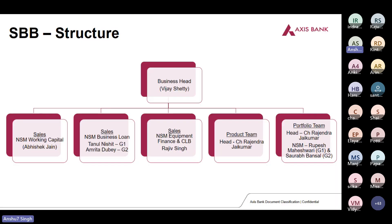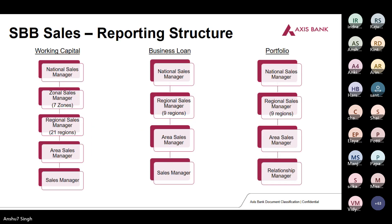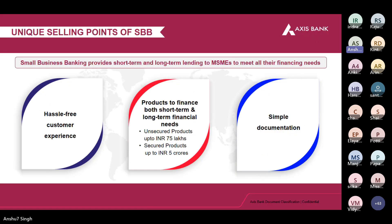This is our business structure — business is headed by Vijay Shetty. This is our reporting structure. Now, USPs of SBB — why should people avail a loan from SBB? We offer hassle-free customer experiences, simple and minimum documentation. We finance short-term as well as long-term needs of customers. We have secured and unsecured products — under secured products we go up to 5 crores, under unsecured products we go up to 75 lakhs.